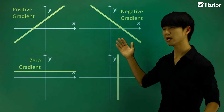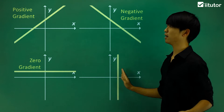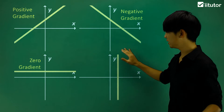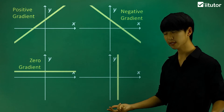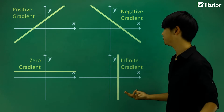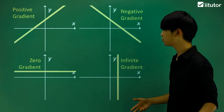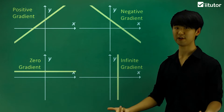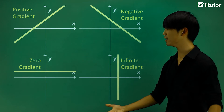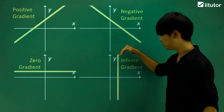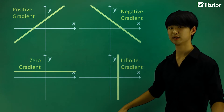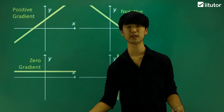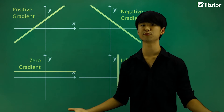Now what if we have a full vertical line? What kind of gradient value would that give me? If we have a vertical line like this, the gradient will have a value of infinite — in other words, we can say this line has an undefined gradient. So these four things describe the different situations we can get from different kinds of gradients.